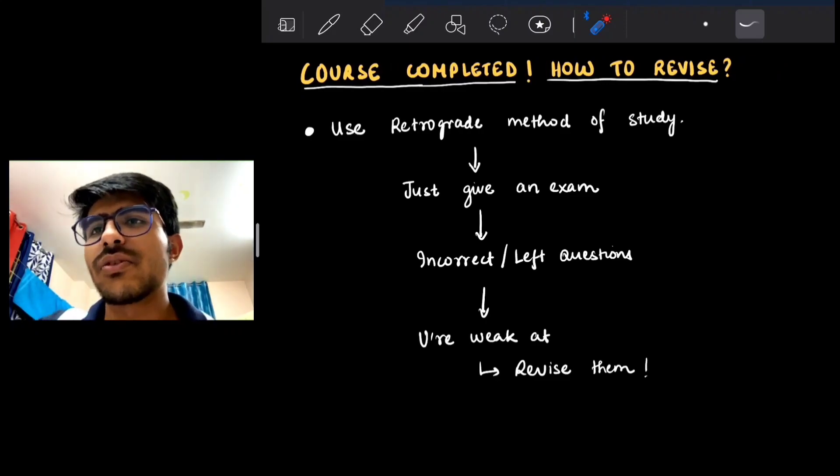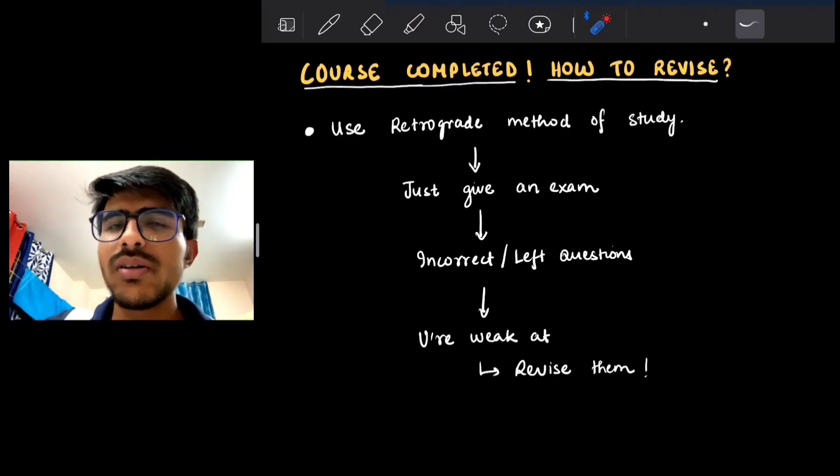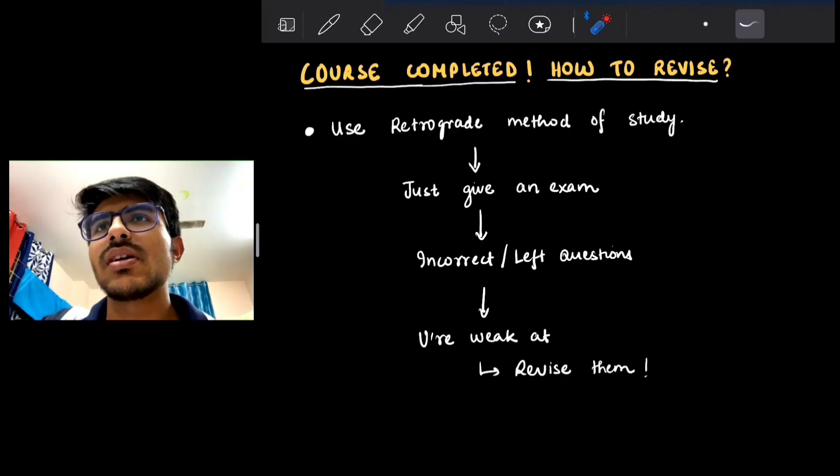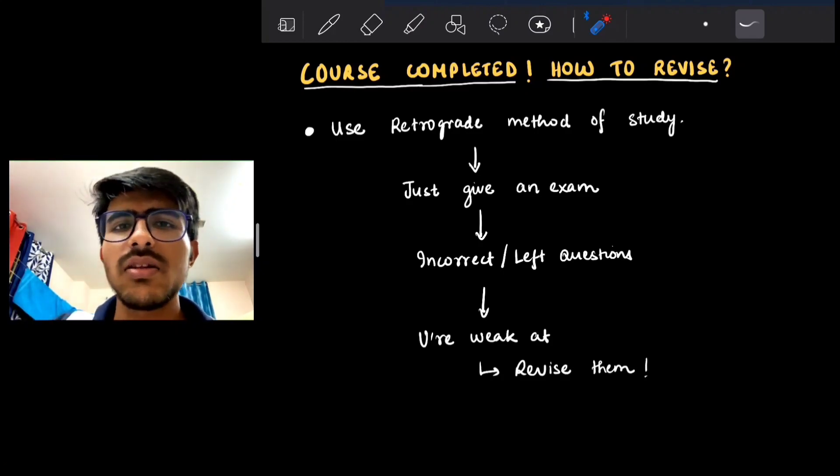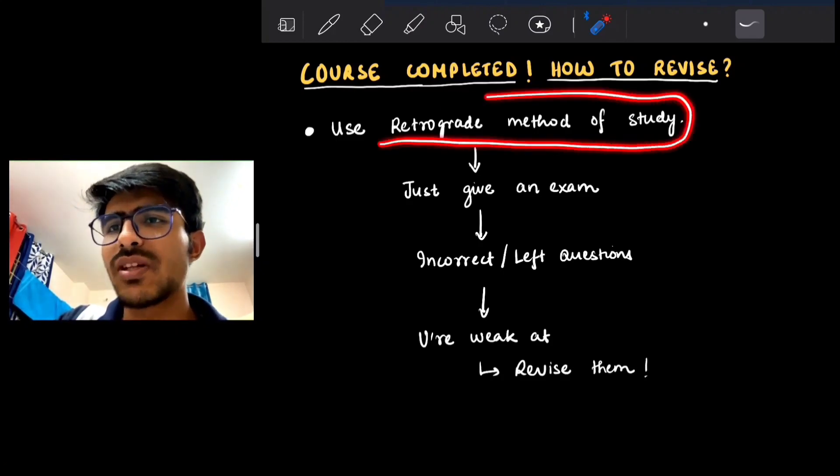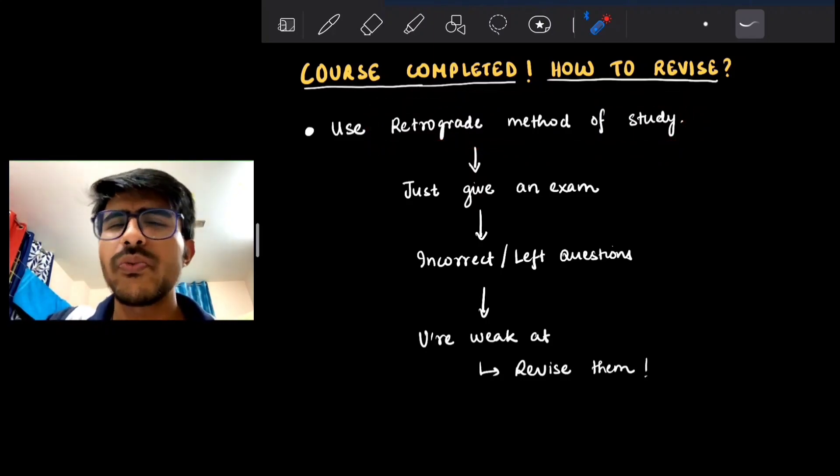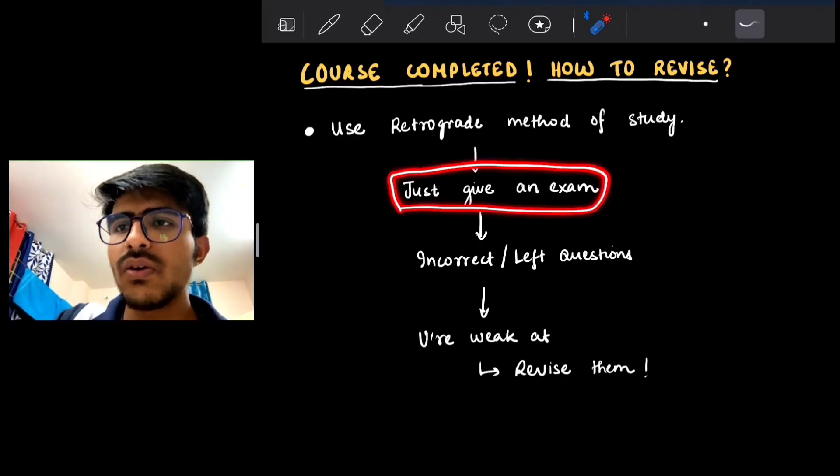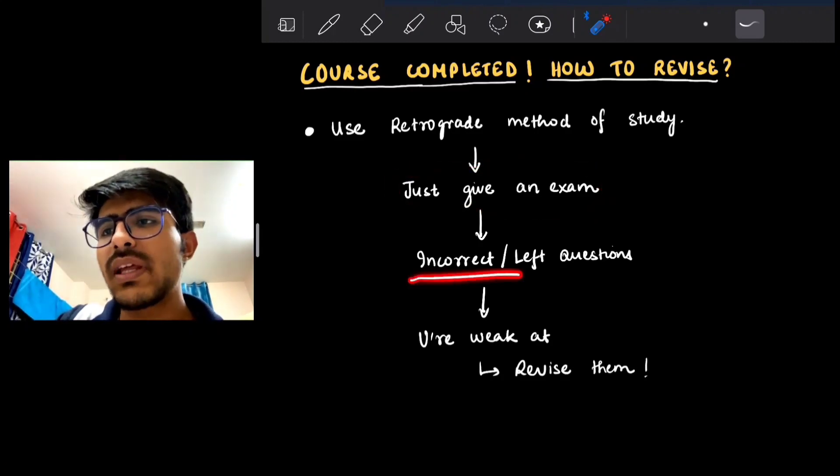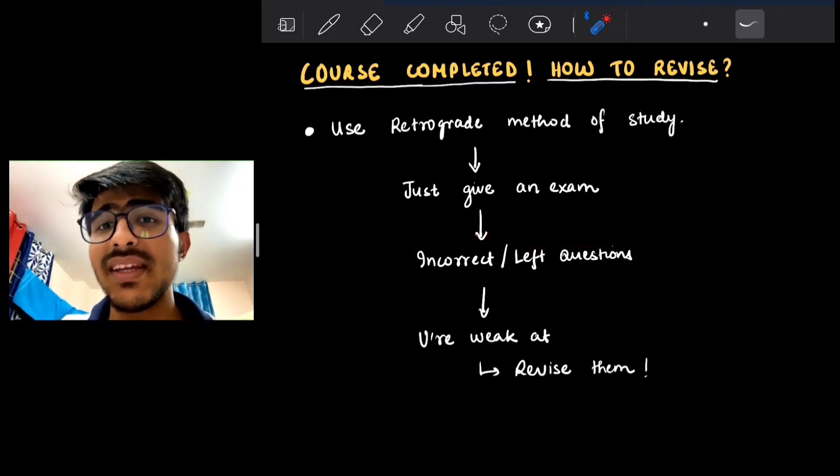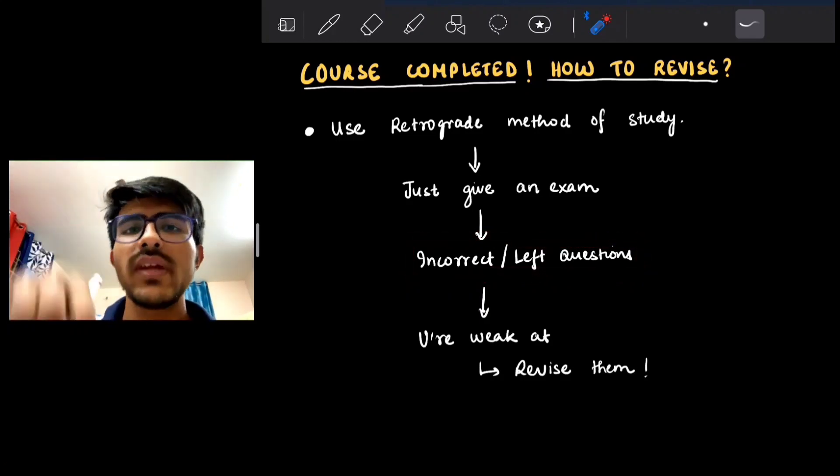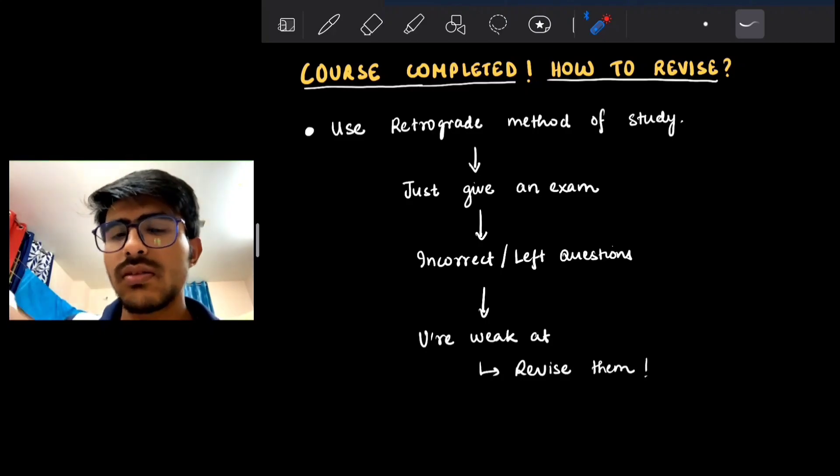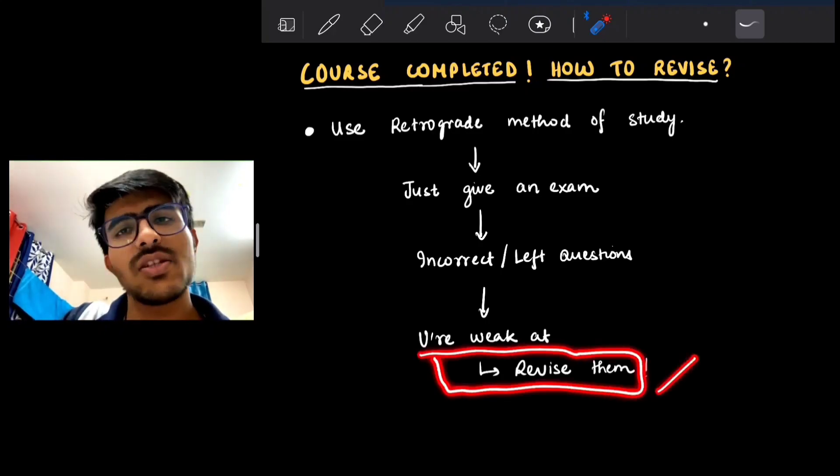Talking about your course revision—many students have difficulty in the approach to revise. One method I'd like to discuss is the retrograde method of studying. In this method, we don't open up the chapters and read. We just sit for an exam, take out the incorrect questions or left-out questions, and now we know we are weak in those topics or chapters. So we revise them and boom, we are over with the revision.